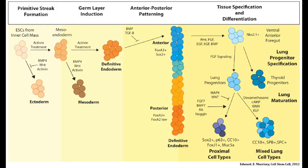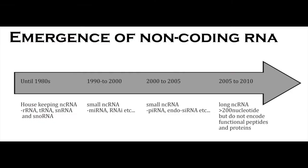Early lung development is a tightly orchestrated process encompassing three stages: one, the formation of definitive endoderm; two, the anteriorization of definitive endoderm; and three, the specification and further maturation of proximal as well as distal lung precursors. There is enough literature available on the association of various genes, proteins and their interactions during lung development. However, studies involving the role of long non-coding RNAs in lung development are very limited.